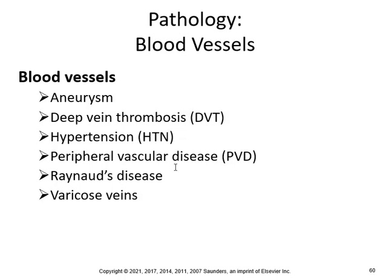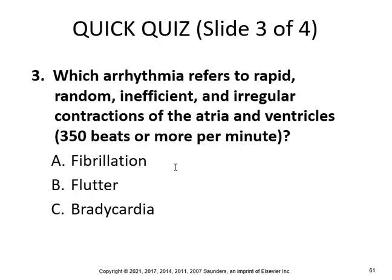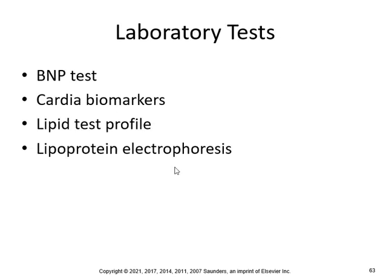A sign of peripheral vascular disease is intermittent claudication — absence of pain at rest but recurrence of pain, tension, or weakness after walking. The arrhythmia that refers to rapid, random contractions of the atria and ventricles at 350 beats or more per minute is fibrillation — atrial fib or ventricular fib — not good.